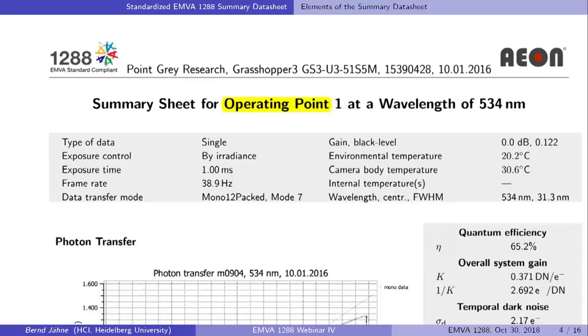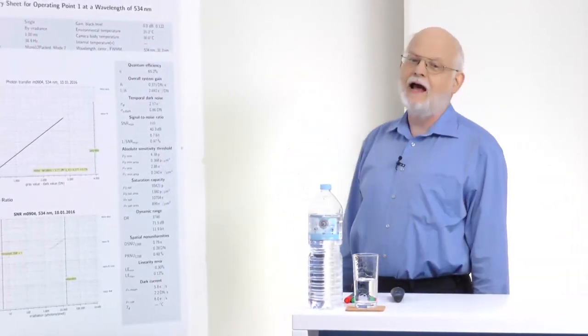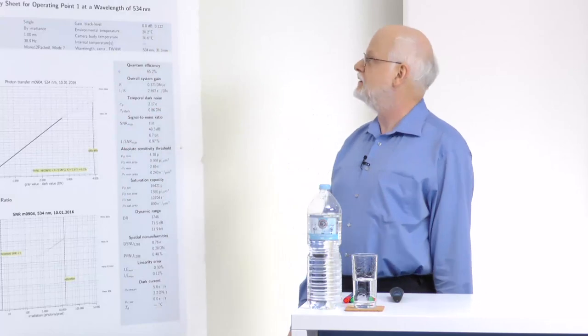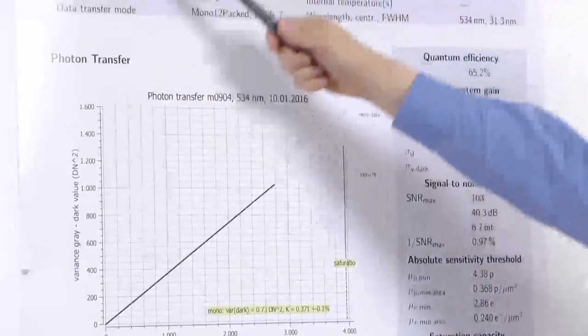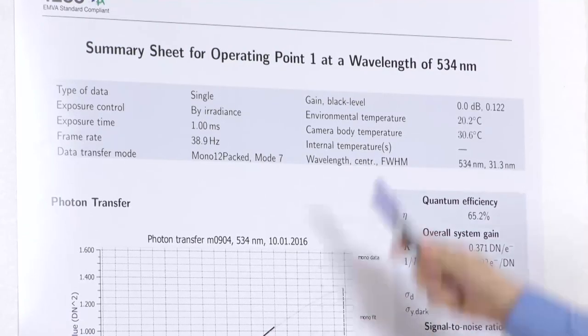Let's get started with the standardized summary data sheet where on one page you find all information of importance. We have actually printed out here on this poster one such summary data sheet and I would like to explain the different elements in this data sheet. You will see a first block of information at the top and this explains or gives all details concerning the so-called operating point.